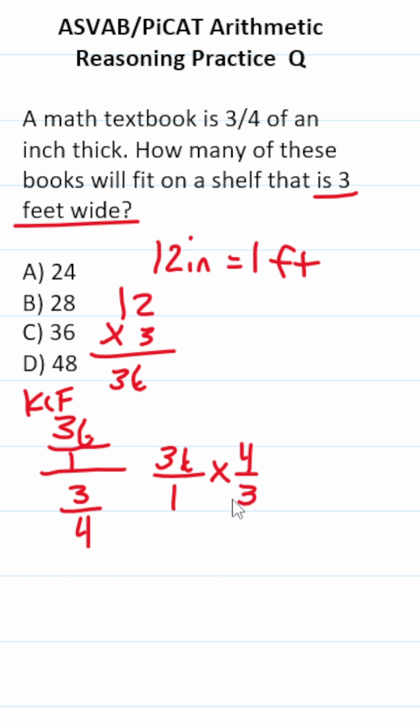Let's go ahead and cross reduce. Three goes into three one time, three goes into 36, 12 times. This is 12 times four, which is 48. In other words, 48 textbooks will fit.